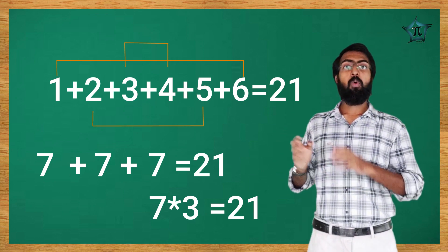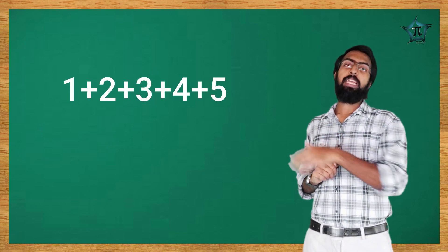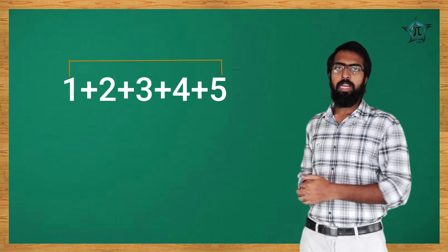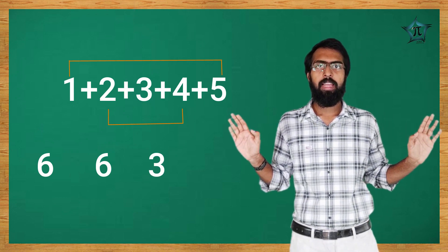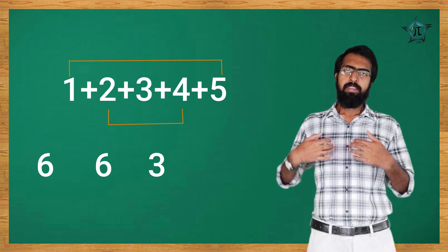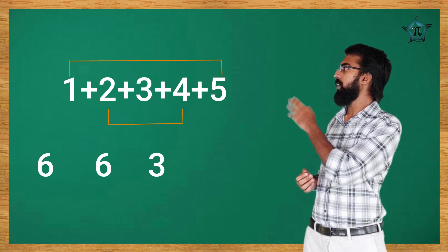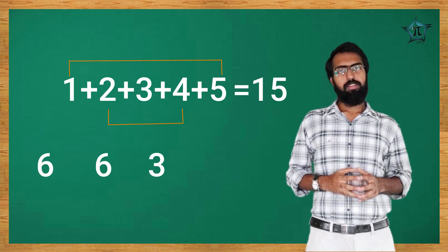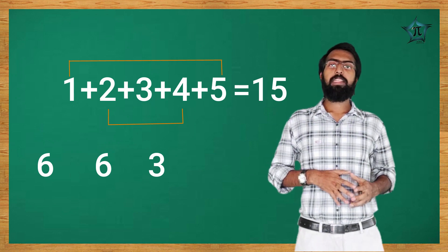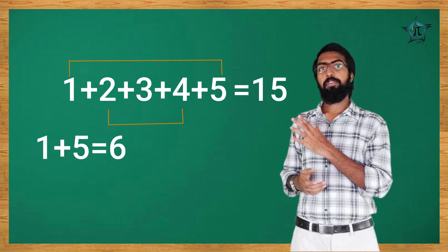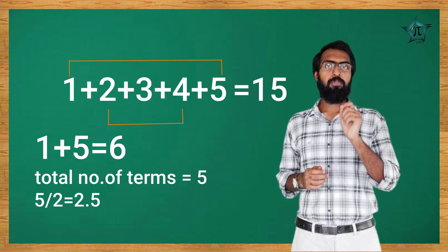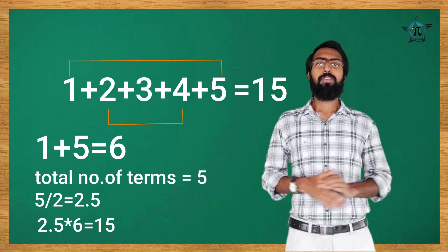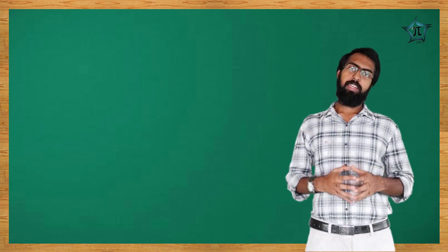Similarly, 1 plus 2 plus 3 plus 4 plus 5 equals 15. Using the easy method: first term plus last term is 1 plus 5 equals 6. Total terms is 5. So 5 divided by 2 is 2.5, and 2.5 multiplied by 6 equals 15. This is the same method: sum of arithmetic sequence equals first term plus last term, multiplied by total number of terms, divided by 2.